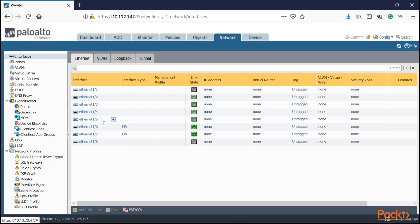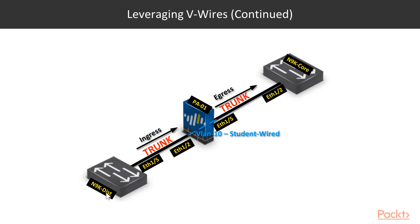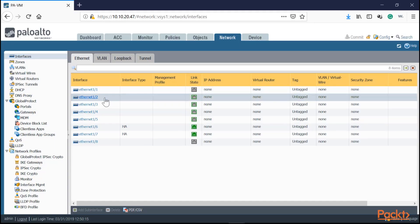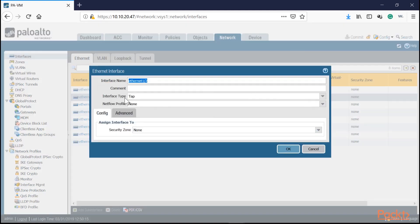Ethernet 1/2 is our ingress interface from VLAN 10, the student wired VLAN, and Ethernet 1/5 is the egress. We'll make both virtual wire interfaces, apply policies, and should be able to ping end-to-end between the distribution and core switch. Let's configure — click the interface and change the interface type to Virtual Wire.